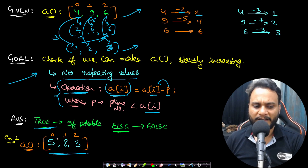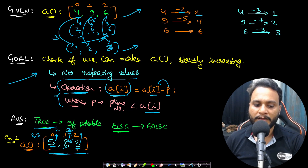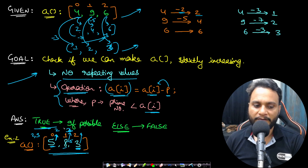If there is no valid configuration — like for [5, 8, 3] — we return false. For 5, the primes less than 5 are 2 and 3; subtracting 3 gives 2. For 8, subtracting 5 gives 3. But for the last element 3, the previous reduced value is already 3. To make it strictly increasing we'd need to reduce 3 further, but any prime subtraction can only decrease it — so it's impossible. Hence we return false.